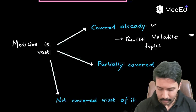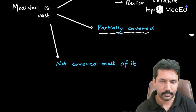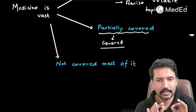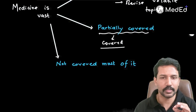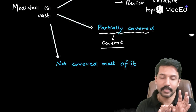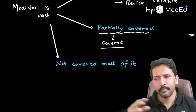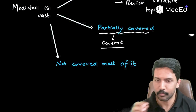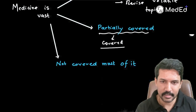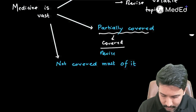If you have partially covered Medicine — meaning some systems done and some not — for the systems you have covered, revise the volatile segments. For example, if you have covered Nephrology, revise the volatile points: the site of immune complex deposition in different types of glomerulonephritis, AKI definition, and CKD staging. Concepts can be skipped at this stage, but volatile points must be revised.